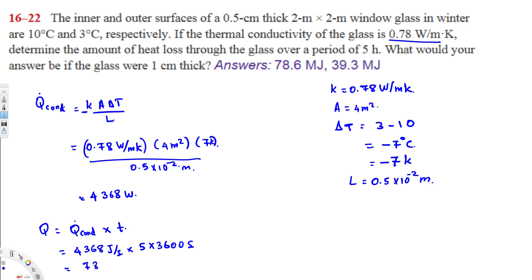This gives Q = 78,624,000 joules. Converting to megajoules by moving six decimal places, the total heat loss over five hours is approximately 78.6 megajoules. That's the answer to part A.